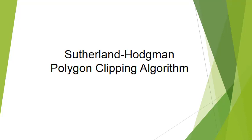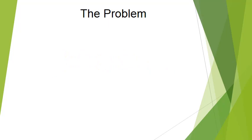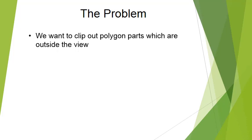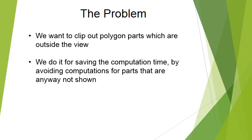The aim of this presentation is to show the Sutherland-Hodgman algorithm for polygon clipping. We have polygons that are painted on the screen and we want to clip out the parts of the polygon which are outside the view. We want to do this because we often make computations on the polygon and we want to avoid making computations on parts we don't see — so we want to save computation time.